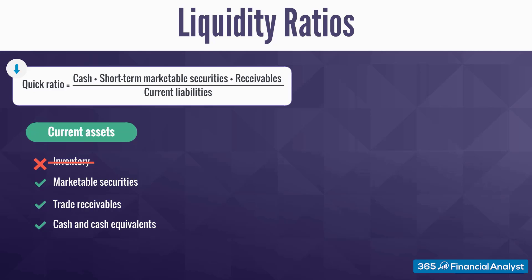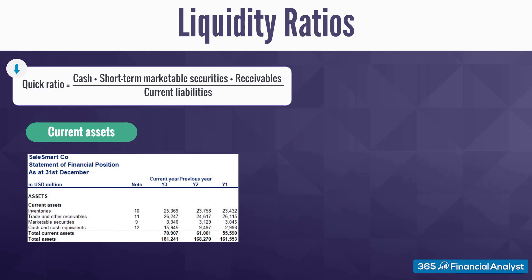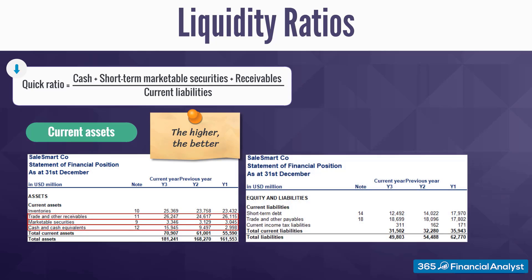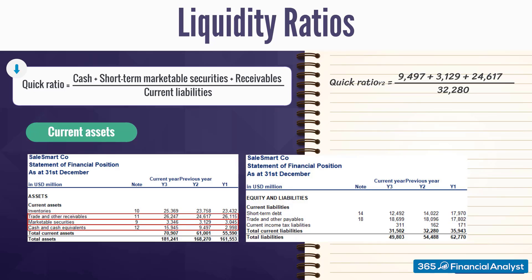The quick ratio considers quick assets only — items that can be easily converted to cash. To calculate it, we divide the sum of cash, short-term marketable investments, and total receivables by the value of total current liabilities. The higher the quick ratio, the more likely a firm is to pay its short-term bills. For SalesSmart, we simply exclude inventory from the numerator. The result is 1.15 in the previous year and 1.45 in the currently reported period. The ratio is improving, meaning current assets are growing faster than current liabilities. Yet SalesSmart needs to be cautious if the ratio gets closer to 1.